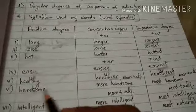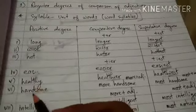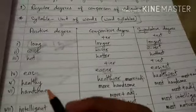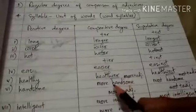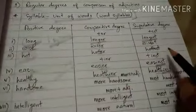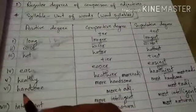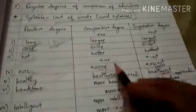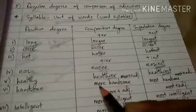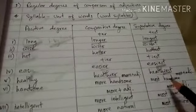But in the case of di-syllabic adjectives that do not end with Y, we add 'more' plus the adjective for comparative degree and 'most' plus the adjective for superlative degree. Like 'handsome' — a two-syllabic word: comparative degree is 'more handsome,' and superlative degree is 'most handsome.'